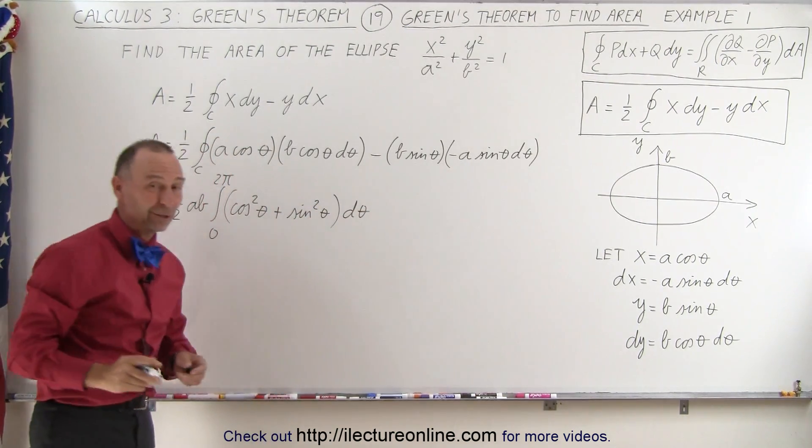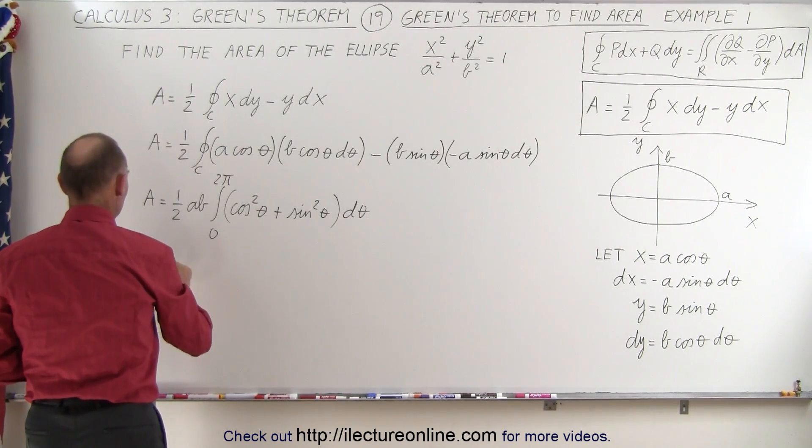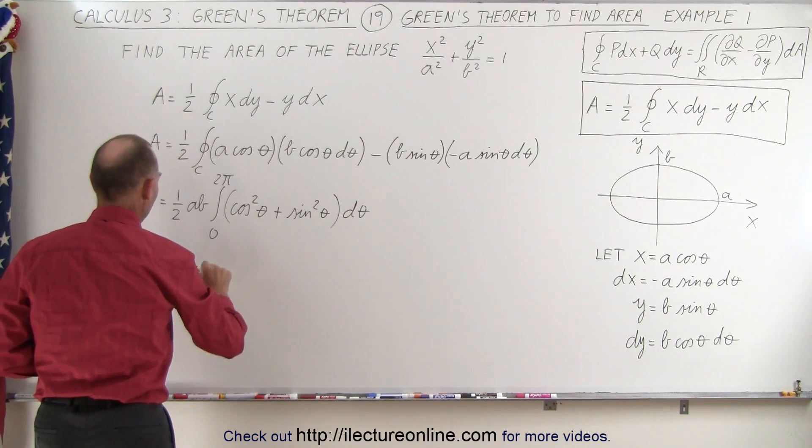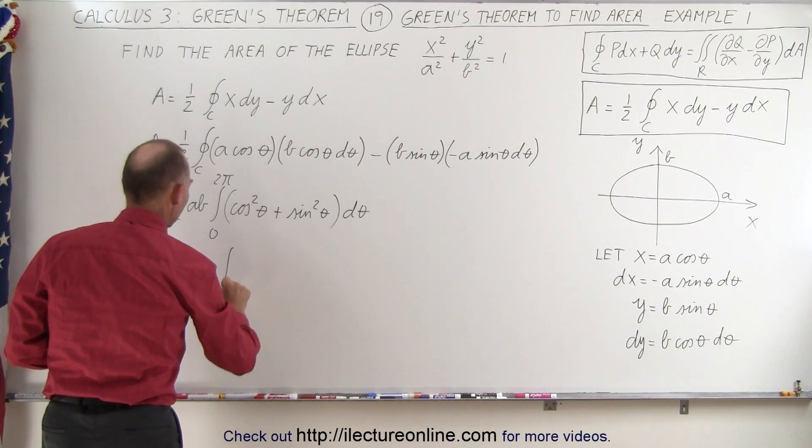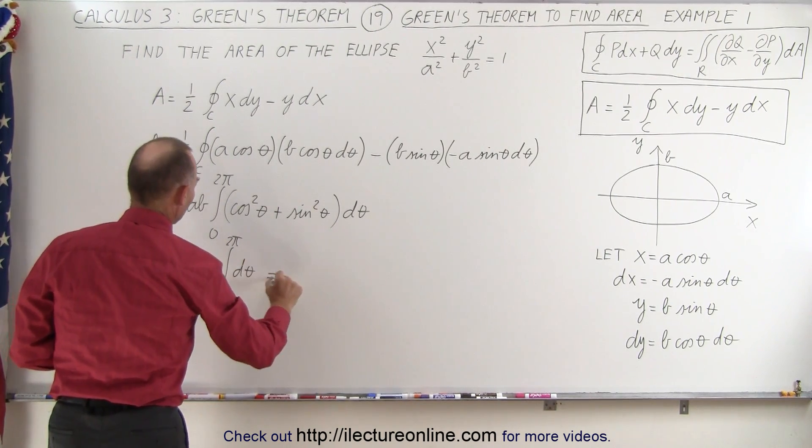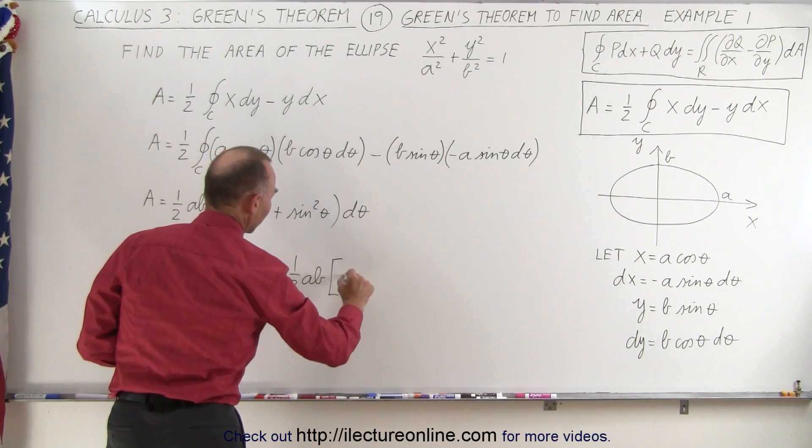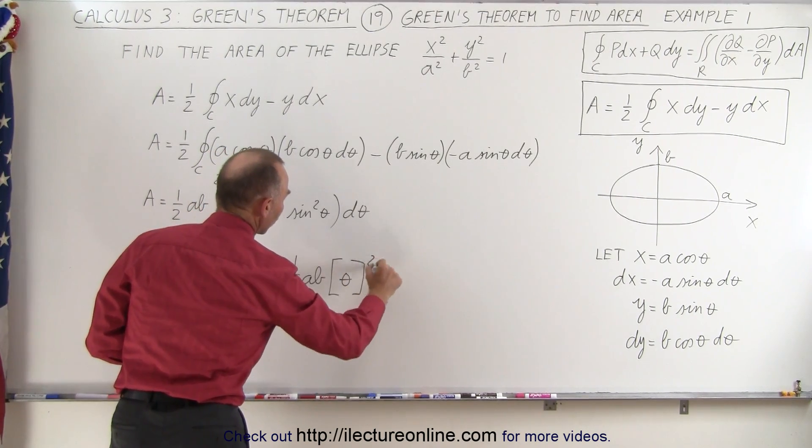And of course, whenever we see the cosine squared plus the sine squared, that becomes one, so this is equal to area is one-half times ab times integral from zero to two pi of d theta, which is equal to one-half ab times theta evaluated from zero to two pi.